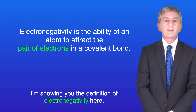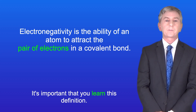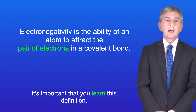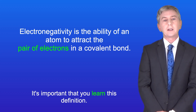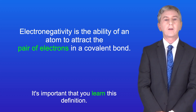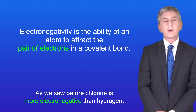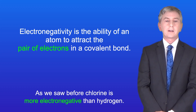The definition of electronegativity is shown here, and it's important that you learn this definition. Electronegativity is the ability of an atom to attract the pair of electrons in a covalent bond. As we saw before, chlorine is more electronegative than hydrogen.